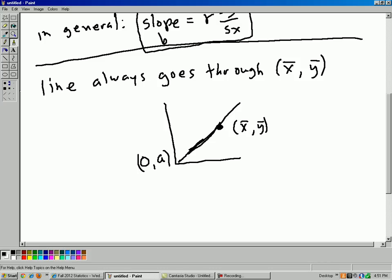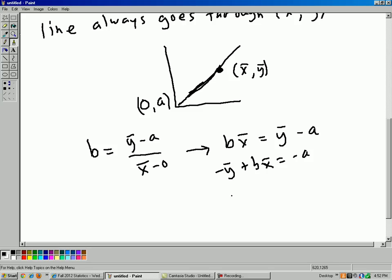So use whatever favorite technique you want to figure out the equation of a line. I'll just say the slope, just definition of slope here. Slope is rise over run, which is y bar minus a divided by x bar minus 0. Do a little bit of algebraic gymnastics here. x bar minus 0, of course, is just x bar. Then, multiply by x bar. So I'm going to have bx bar equals y bar minus a. Then, move the y bar over. So I'm going to have negative y bar plus bx bar equals negative a. Multiply the whole thing by negative one. I'll get y bar minus bx bar equals a.